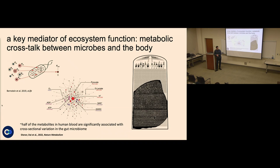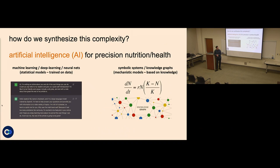We know there's a really complicated interplay — a crosstalk — going on between metabolites produced by our microbiota and our bodies. We don't have a Rosetta Stone for translating what's being said in this conversation, and that is the task ahead. I frame this a little bit in terms of artificial intelligence. There are two flavors of AI: the exciting popular one right now — things like ChatGPT — where you have a corpus of knowledge and train an algorithm to make predictions from that information.